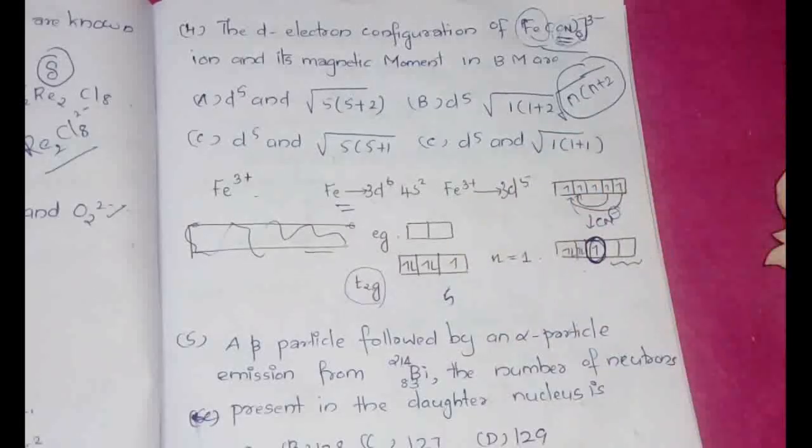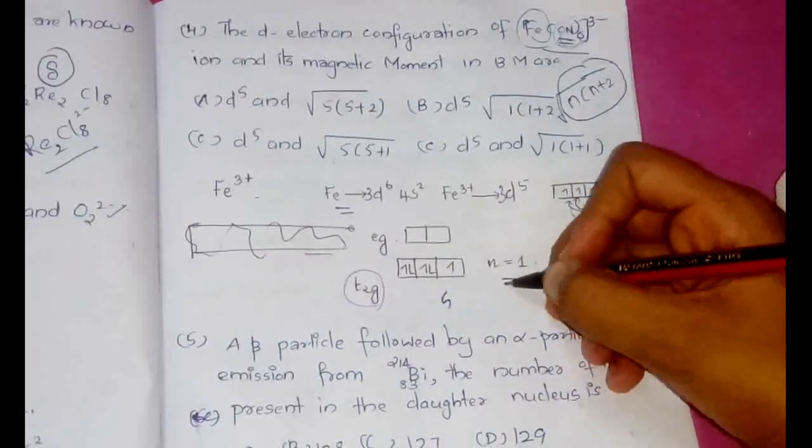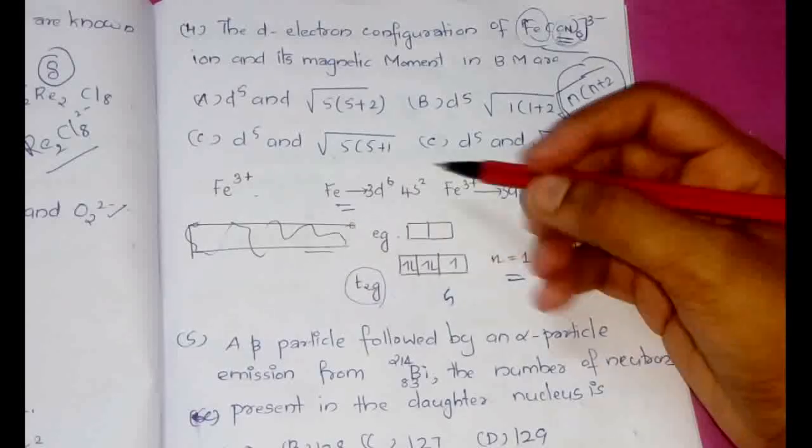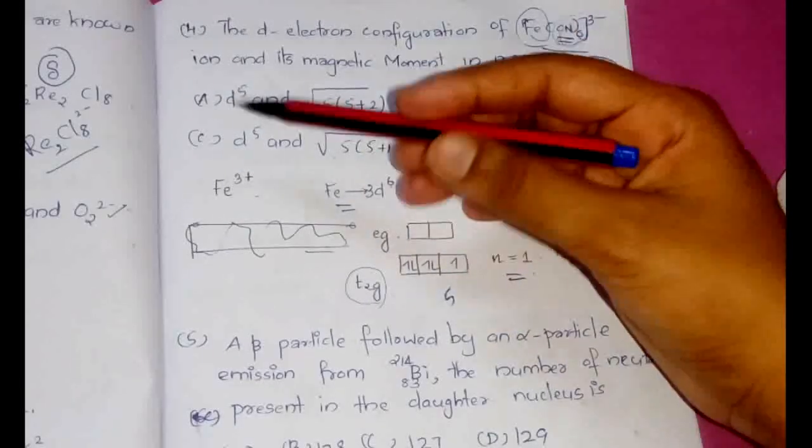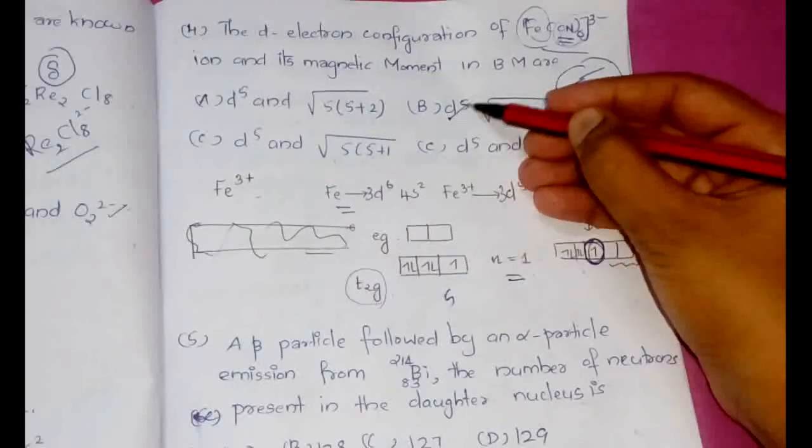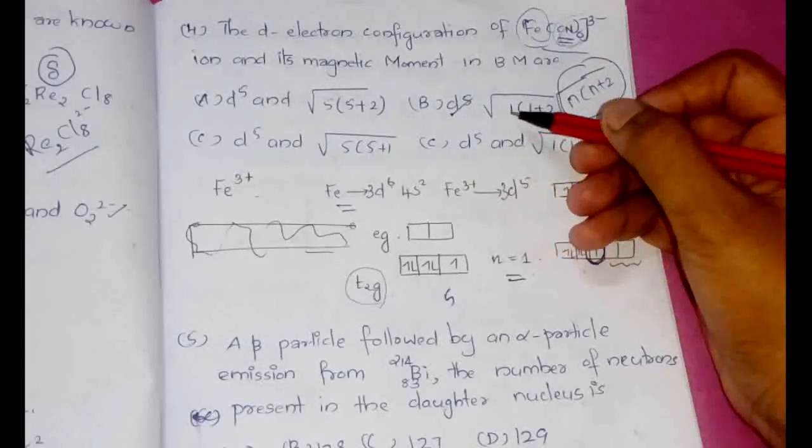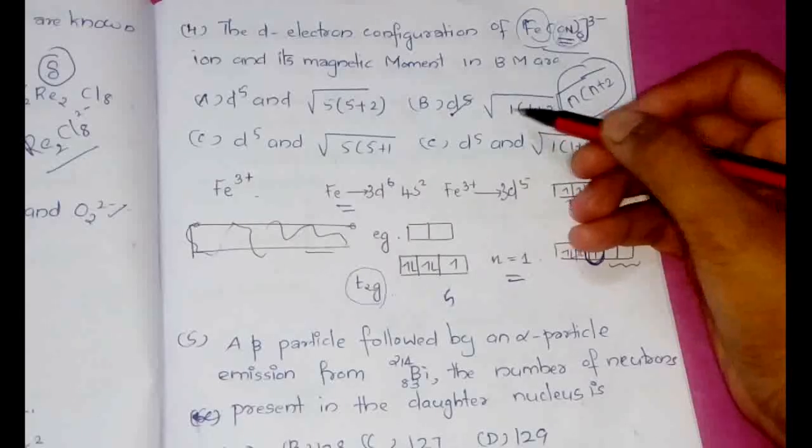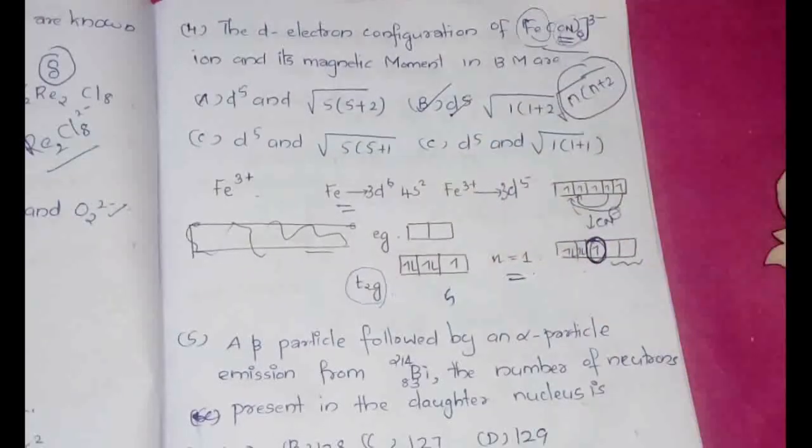So 1, 2, 3 will be filled, 4 and 5 will be filled in the T2g level itself. So as a result, n is equal to 1. In either way we can write it as 1. And therefore the answer would be the electronic configuration is d5 and the Bohr magneton will be n into n plus 2, which is 1 into 1 plus 2. So option B would be the answer that we are looking for.